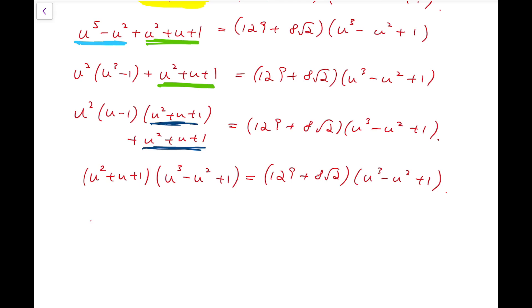So that means either I will have u cubed minus u squared plus 1 to be equal to 0, because they're on both sides, or I will have u squared plus u plus 1 to be equal to 129 plus 8 root 2.